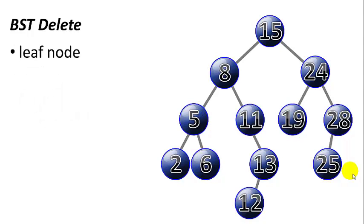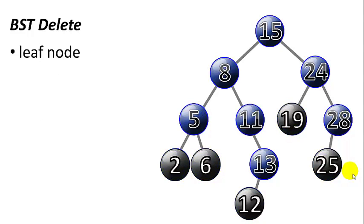First let's say we want to delete a node that is a leaf node. In this tree, we can see that nodes 2, 6, 12, 19, and 25 are all leaf nodes. If we want to delete one, we can simply delete it without affecting the rest of the tree.